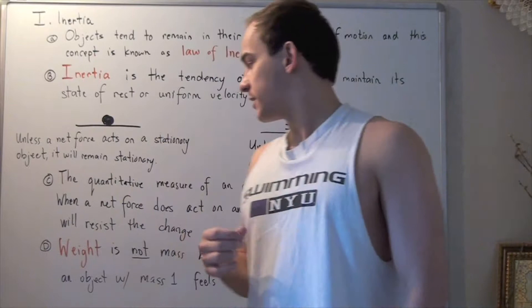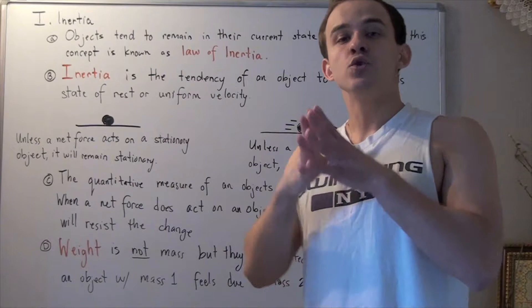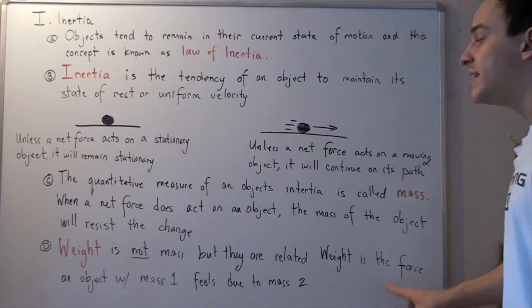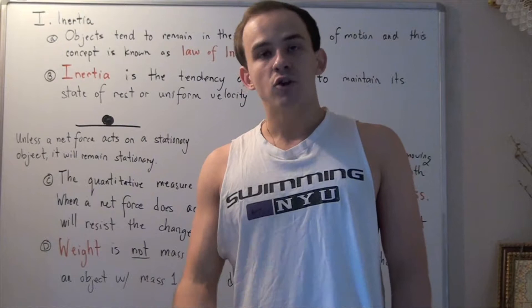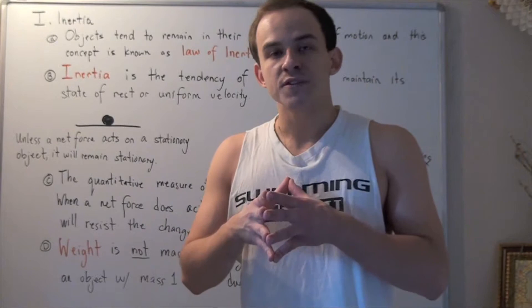Now, we need to differentiate between mass and weight. The two things are different, but they are related. Weight is the force an object feels — the force that mass 1 feels due to another mass, mass 2. For example, whenever I stand on a scale, the scale reads a certain weight, and what the scale is actually reading is the force that I feel due to the Earth. The Earth is pulling on me, pulling me down toward its center.